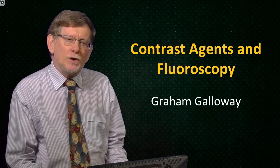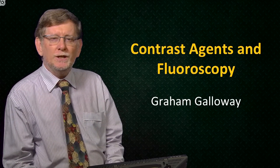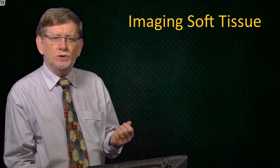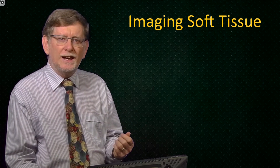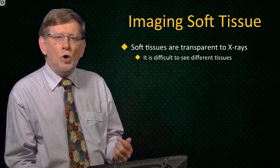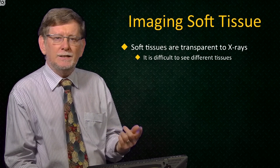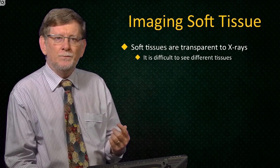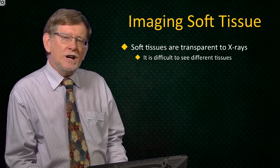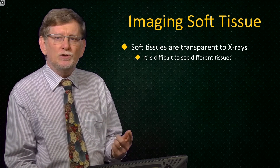Often when we consider x-rays, we think of broken bones or teeth. This is because they are dense tissues and show up well on x-ray. Soft tissues do not absorb x-rays, and so the signal is far less attenuated. Even more importantly, we cannot differentiate between the different types of soft tissue.